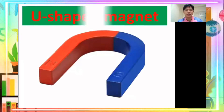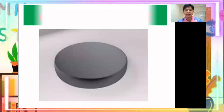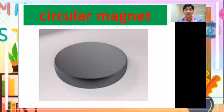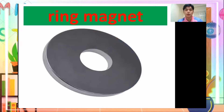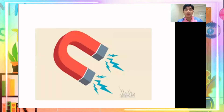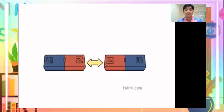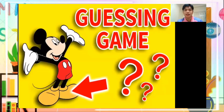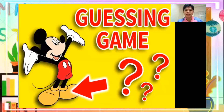What type of magnet is it? It's a U-shaped magnet. Next — it's a circular magnet. Next — it's a ring magnet. And this one is attract. And this one is repel.